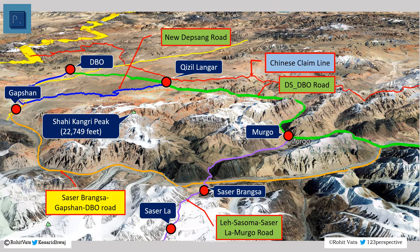Secondly, this road has a massive 18,000-feet mountain range towards its immediate east. This means that for most of its length, movement along this critical stretch of road will not be visible to Chinese observers on their side. Furthermore, these mountains will also provide cover against artillery fire, giving the much-required depth to the last stretch of connectivity with the Depsang plains and DBO.